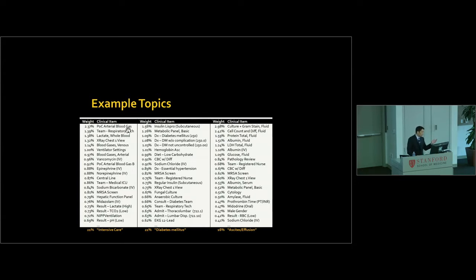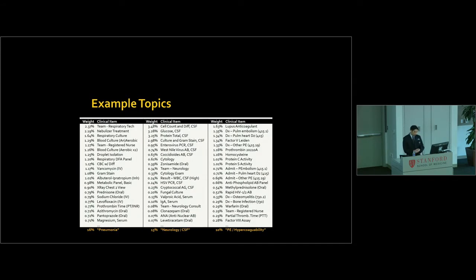The virtue of this approach is when you look at example topics, this is three example topics and the clinical items that are most common in each one. It is often very interpretable what is going on. So I look at this topic, I see checking arterial blood gas, respiratory tech, ventilator settings, epi, norepi. Oh, this topic is about critical care in the ICU. This one, getting insulin, diabetes. This one is about managing somebody with diabetes. This topic is about testing bodily fluid, albumin infusion, because they probably have ascites from cirrhosis.